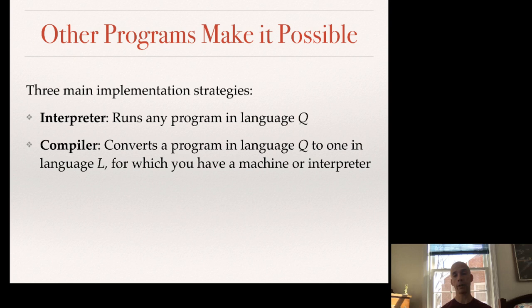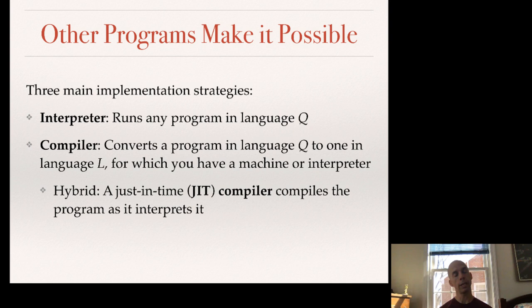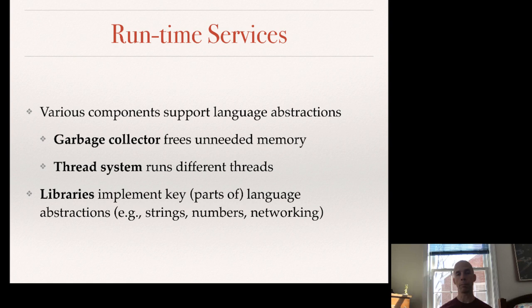For example, if the language is C, you could run GCC to compile to x86 machine code and run it directly. Alternatively, if your language was Haskell, you could compile it to C, which could then be compiled to machine code, or compile it to JavaScript and interpret that inside a web browser. A hybrid strategy is to begin by interpreting the program, then compile it as the program runs — a way of amortizing the cost of compilation over execution. Whatever strategy you take, there are typically additional services needed, such as a garbage collector for memory management and a thread system for running multiple parallel threads.